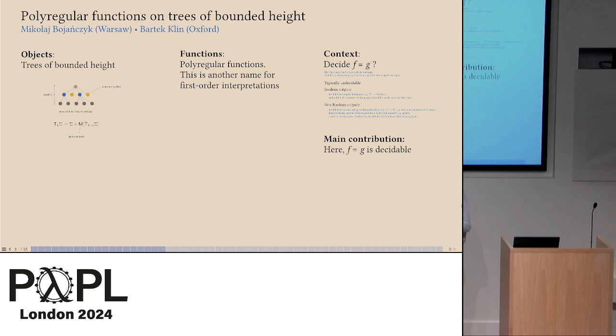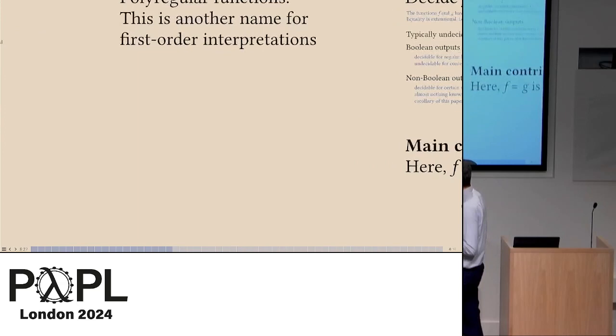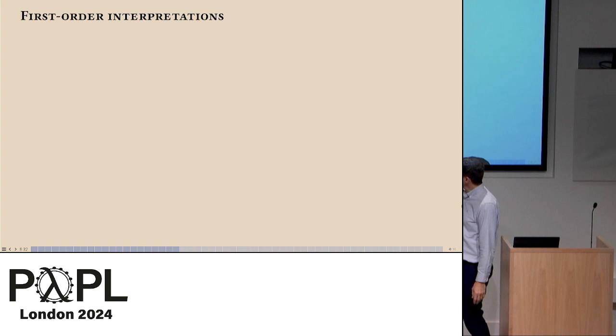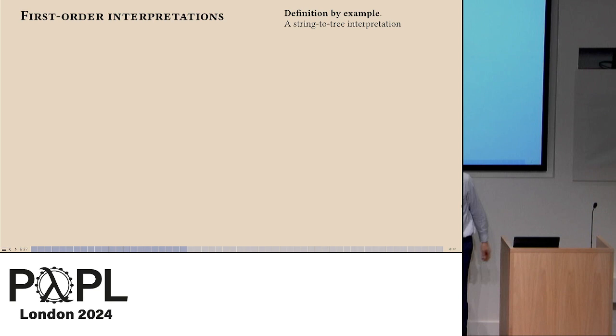I'd like to maybe remark that the starting point for this research was a remark by Marcelo Fiore who said we were working previously on ordered objects and he said, why don't you work with unordered things and multi-sets, and this seemed to turn out to be a fantastic thing. So that's the objects. We have trees of bounded height. Now, the functions - these are the polyregular functions in the title but that's just another name for a classical concept called first-order interpretations. This is meant to be the appropriate notion of regularity if you want your outputs to be polynomial size.